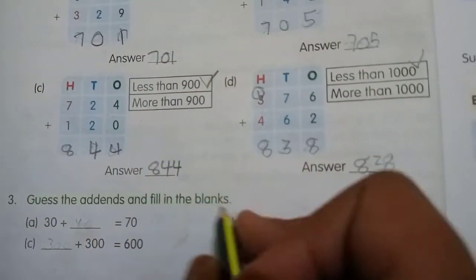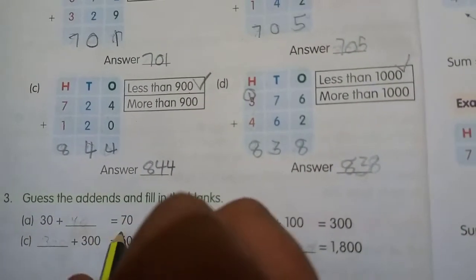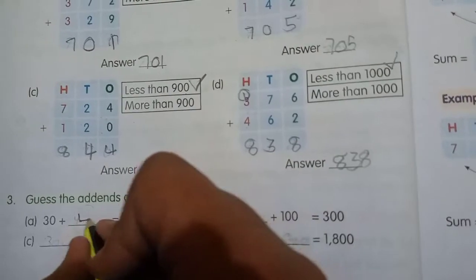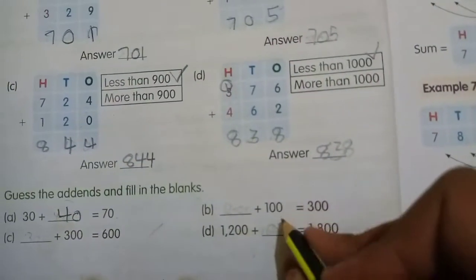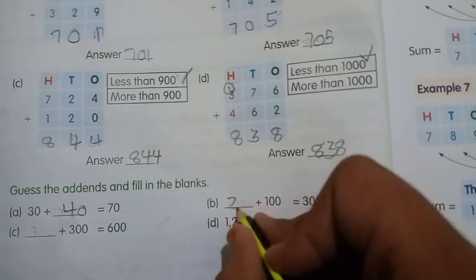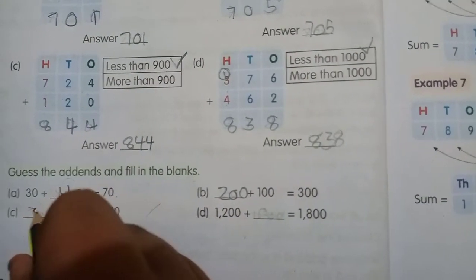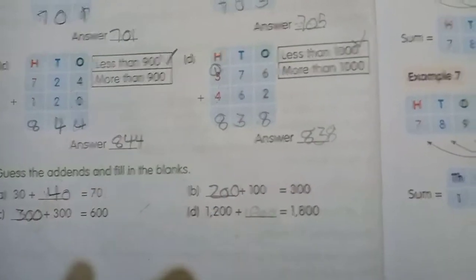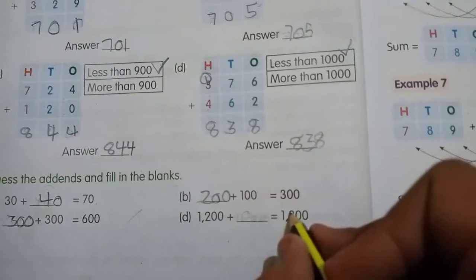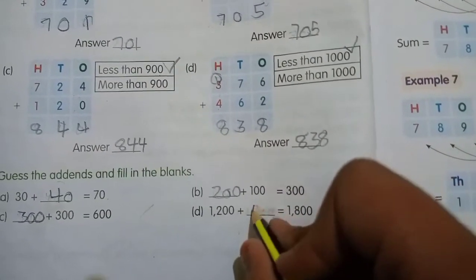Give the addends and fill in the blanks. 830 plus dash equals 740. Dash plus 100 equals 300, 200. Dash plus 300 equals 600, 300. 1200 plus dash equals 1800, 600.